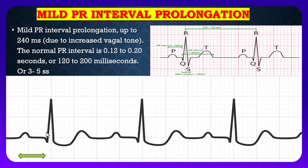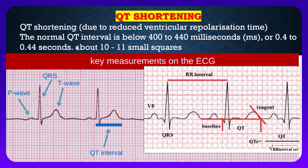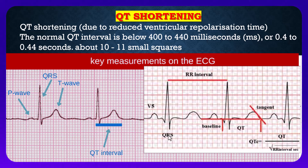The other change is QT shortening, due to reduced ventricular repolarization time. The normal QT interval is below 400 to 440 milliseconds, or 0.4 to 0.44 seconds, about 10 to 11 small squares. Here the small squares are 8 in number, so there is shortening of the QT interval in digoxin medication. A patient who has taken digoxin, his QT interval will be short — this is a classical feature of the digoxin effect.